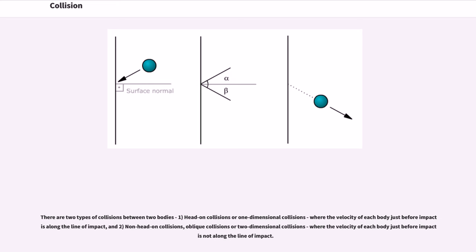There are two types of collisions between two bodies: one, head-on collisions or one-dimensional collisions, where the velocity of each body just before impact is along the line of impact, and two,